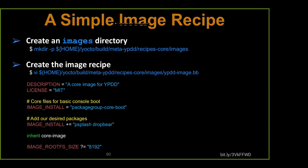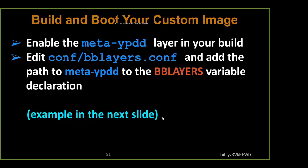Add those package groups to your IMAGE_INSTALL to get all the features you want, then add your additional custom features on top. The first IMAGE_INSTALL entries are the base OS requirements; the ones below could also be called image features - the optional things built on top. All those variable names do the same thing. We enable our meta-ypdd layer using the bitbake-layers tool, which edits the bblayers.conf file automatically.